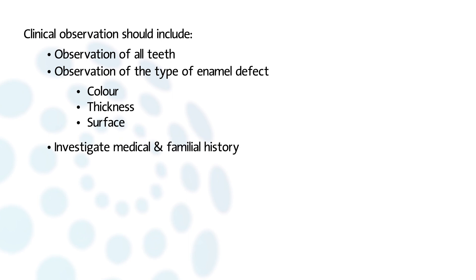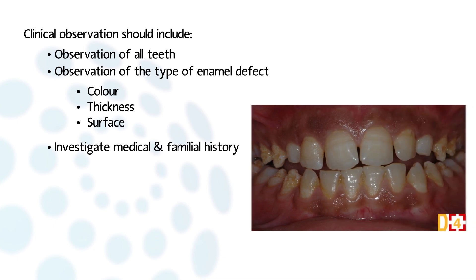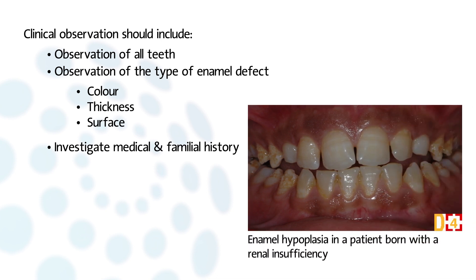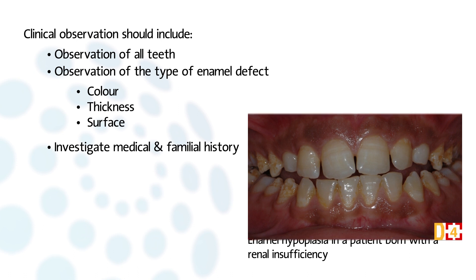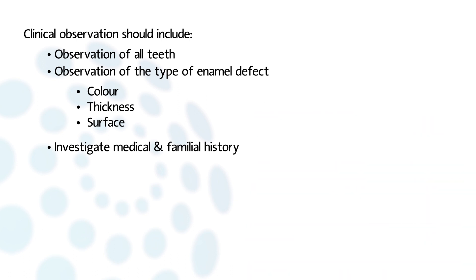Investigate the meticulous medical and familial history. Ask these types of questions: Does anyone else in the family have anything like this? Is there anything in the past medical history which might affect enamel formation? Are there associated extraoral symptoms or other disorders? Do a pedigree plotting.